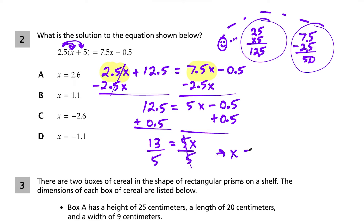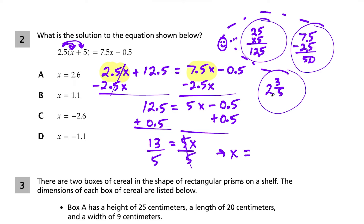We add 0.5 to both sides: 12.5 plus 0.5 is 13, giving us 13 = 5x. Then divide both sides by 5. For 13 ÷ 5: 5 times 2 is 10, leaving a remainder of 3, so that's 2 and 3/5. Multiplying 3/5 top and bottom by 2 gives 6/10, which is 0.6. So x = 2.6, which matches choice A.